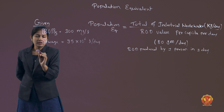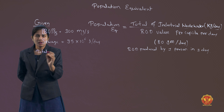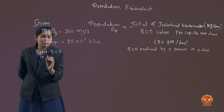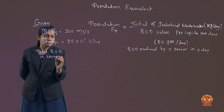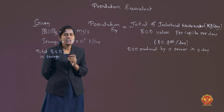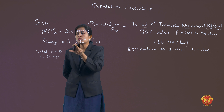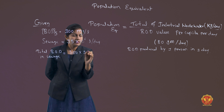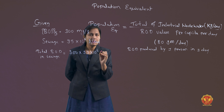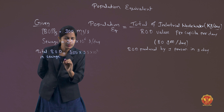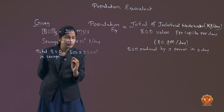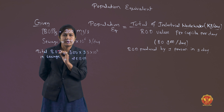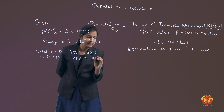Now, we calculate the total BOD in sewage. Total BOD in sewage equals BOD5 multiplied by the sewage quantity: 300 mg/L into 95 into 10 to the power 6 liters. Converting to kilograms, we get 28,500 kilograms per day.